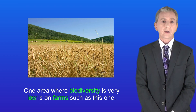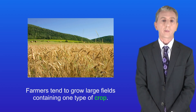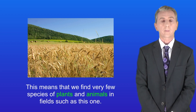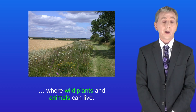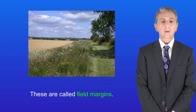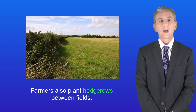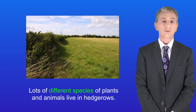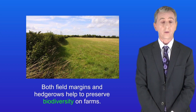One area where biodiversity is very low is on farms. Farmers tend to grow large fields containing one type of crop, which means that we find very few species of plants and animals in such fields. To help with this, many farmers leave a strip of land around fields where wild plants and animals can live — these are called field margins. Farmers also plant hedgerows between fields, and lots of different species of plants and animals live in hedgerows. Both field margins and hedgerows help to preserve biodiversity on farms.